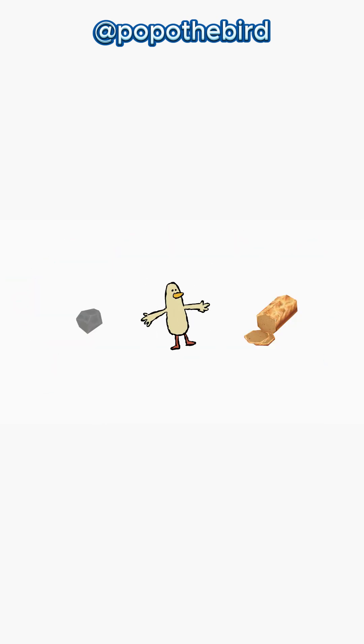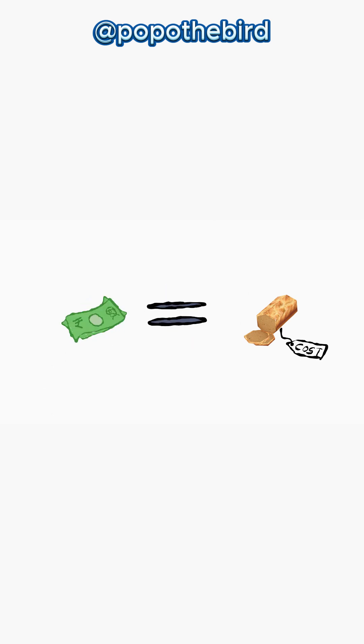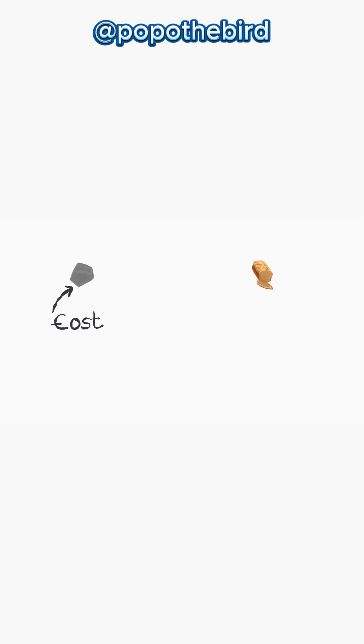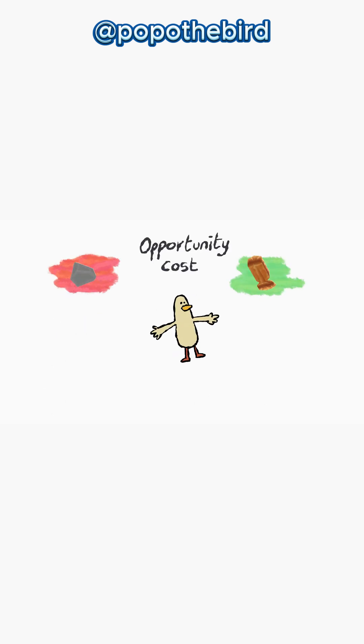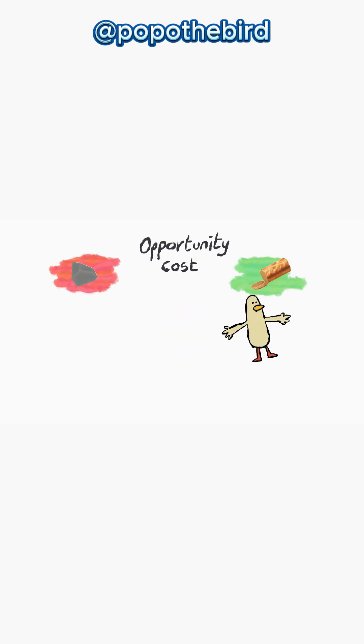The pebble — the shiny thing duck did not choose — that is the cost of the bread. Not leaves, not money. The cost is the next best thing duck gave up. That is opportunity cost: what you lose when you choose something else.